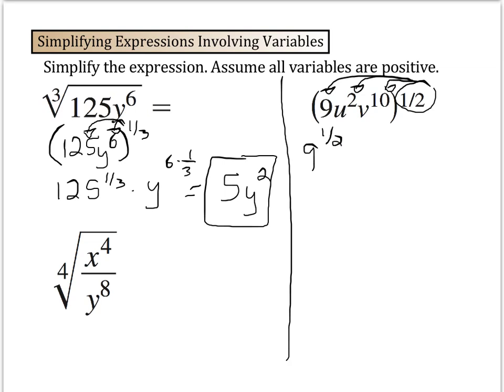We have 9 to the 1 2nd times u to the 2 times 1 2nd times v to the 10 to the 1 2nd. We distribute that 1 2nd to each term in here. Well, we know the square root of 9 is 3, u to the 2 times 1 2nd will just be u, and v to the 10 times 2 will be v 10 over 2, which is 5.